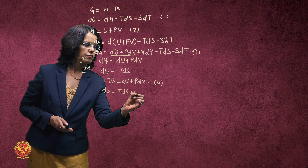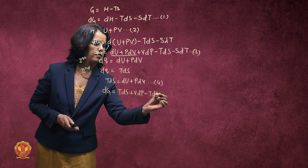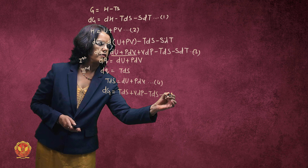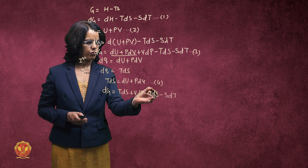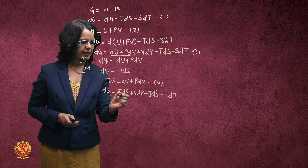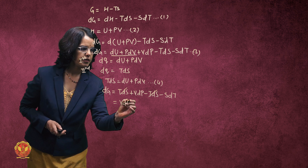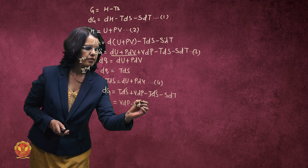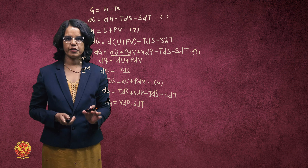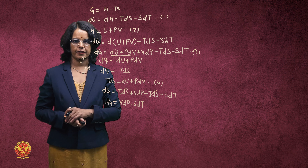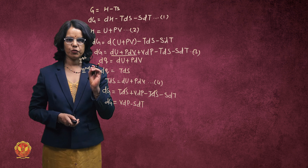Substituting these laws, we see that TdS and minus TdS cancel out, leaving us with dG = VdP - SdT.